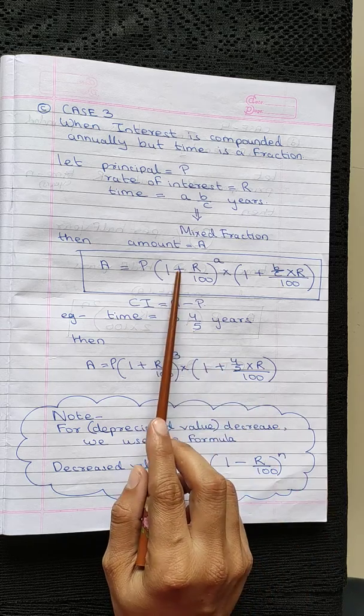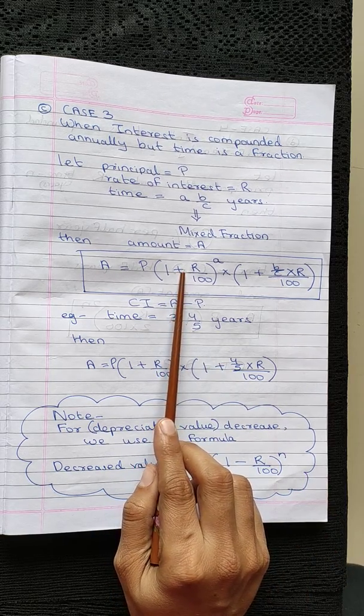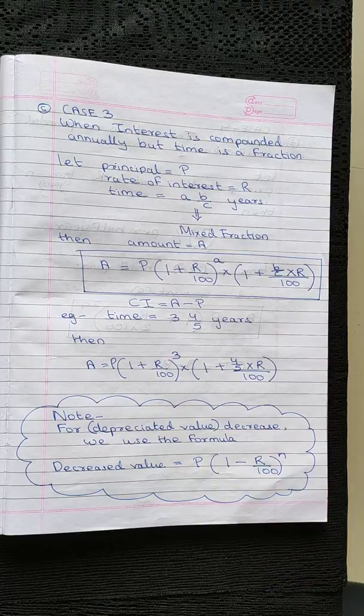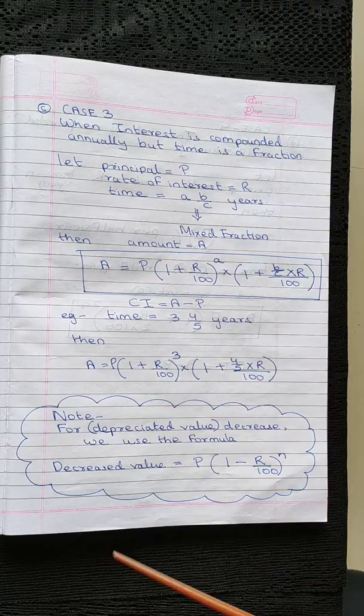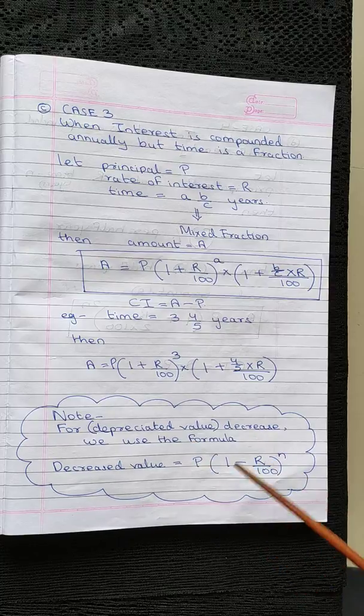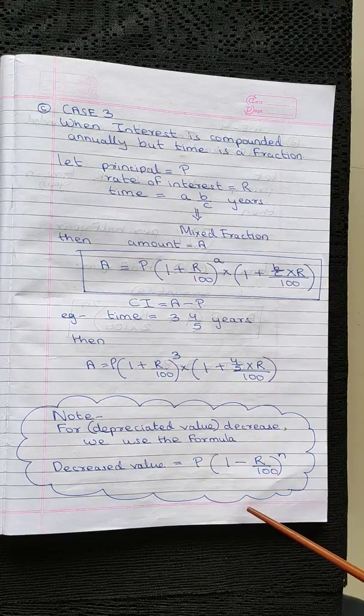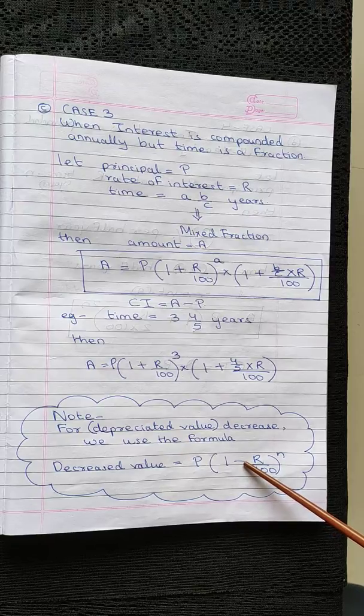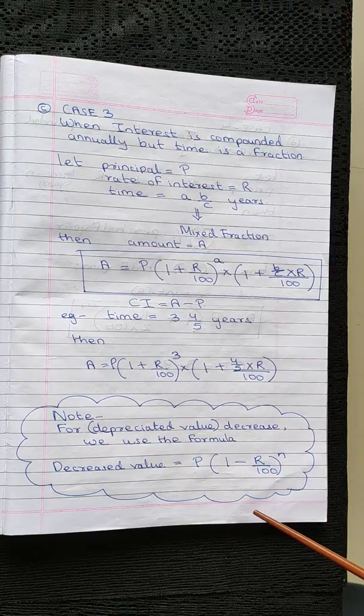If there is a gain or we are considering it as a positive value of R, we will use the plus sign, whereas when the value is decreasing or there is a depreciated value, we will use the negative value of rate of interest and the operation becomes subtraction.